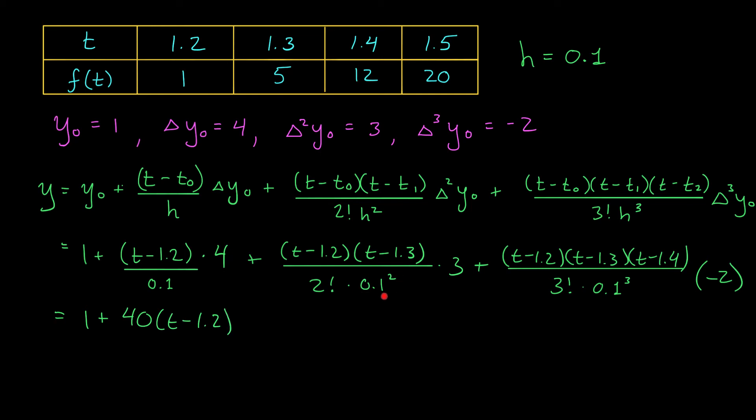Here I'm dividing by 0.1 squared, which is like multiplying by 100, right? My coefficient here is going to be 100 times 3, divided by 2. So that will be 150, times t minus 1.2, t minus 1.3.